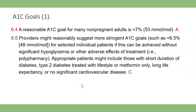A reasonable A1C goal for many non-pregnant adults is less than 7 — that's an A recommendation. We might want to have them be less than 6.5; it just depends. I'm going to show you the graph that will help you determine what your patient's A1C goal is going to be. I think it's nice that we have more leeway to determine the A1C goals ourselves — it's really good for accountable care and quality of care.